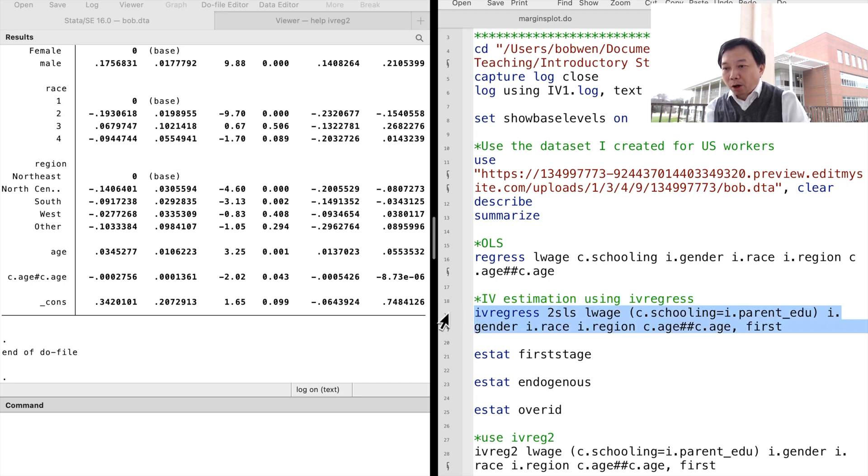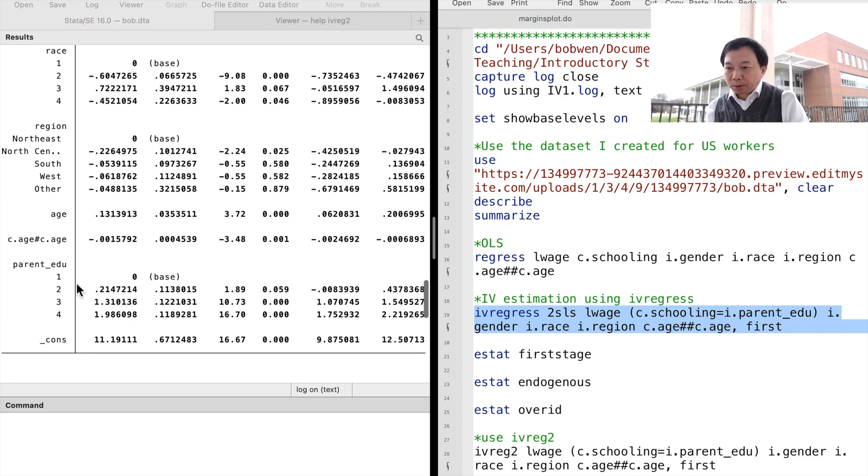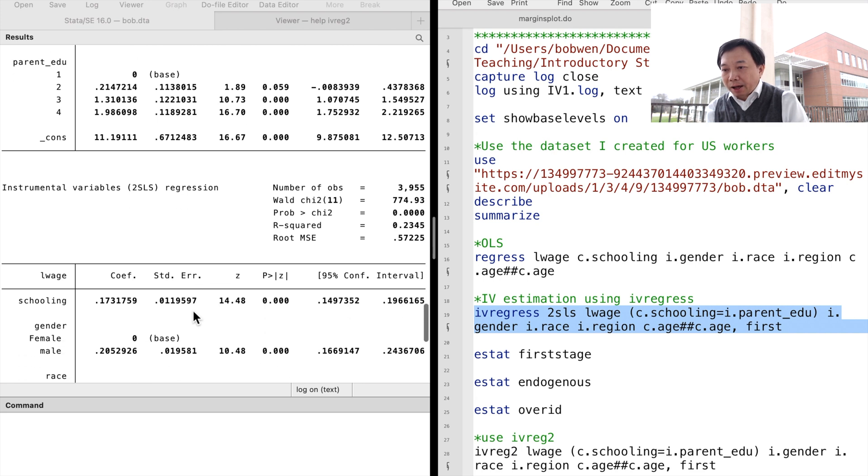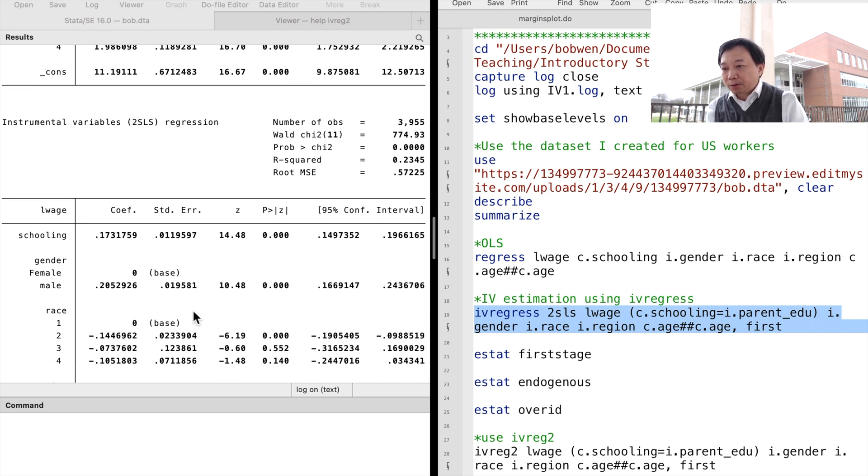We use the option first to report the first stage regression results. In the first stage regression, we see that parents' education is highly correlated with their child's years of schooling. Parent education is not a weak instrument. The IV satisfies the relevance condition.